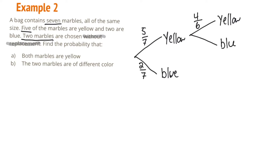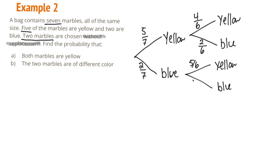Without replacement means we don't put the marble back. If we selected a yellow first, there are now four yellows and still two blues out of only six remaining marbles. If we selected a blue first, there are still five yellows but only one blue left, both out of six. All branches from each node should add up to one, confirming the tree diagram is correct.